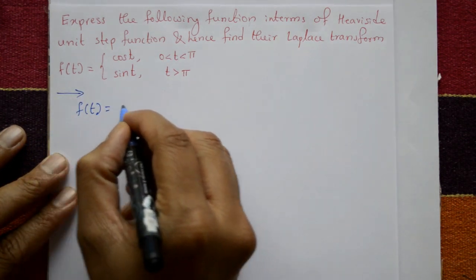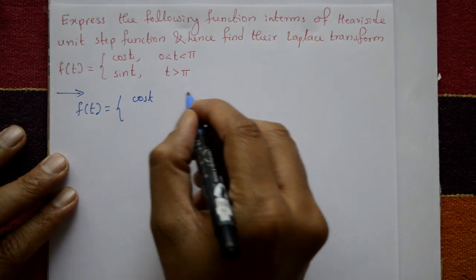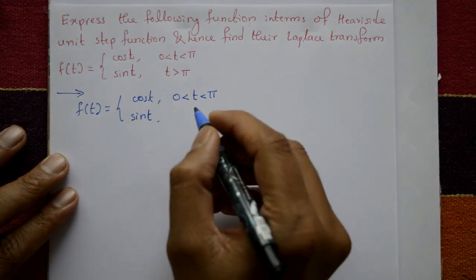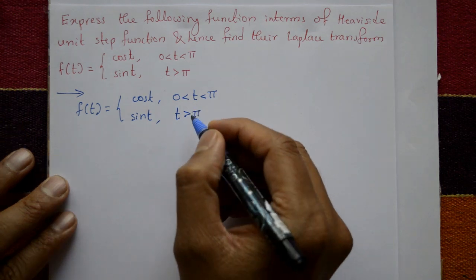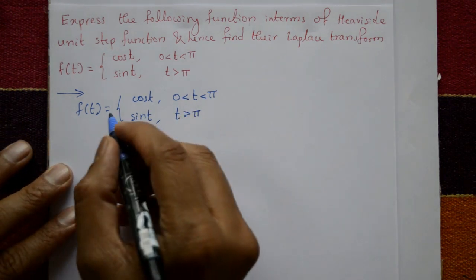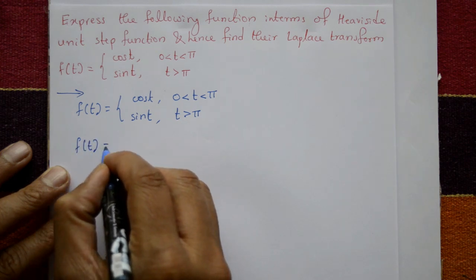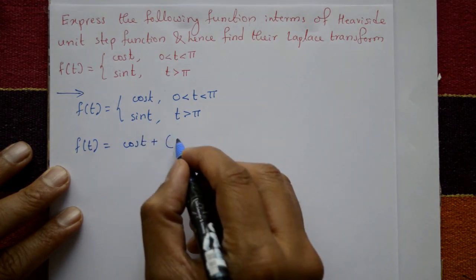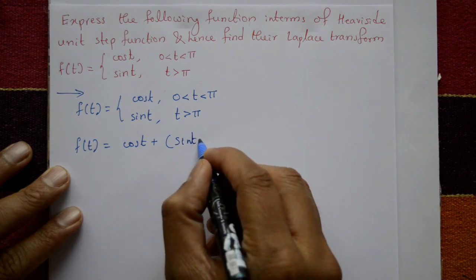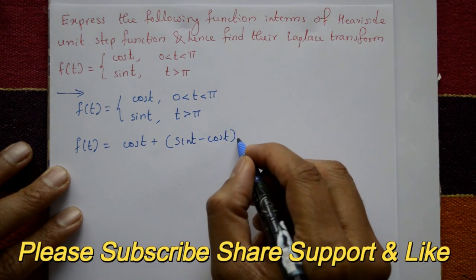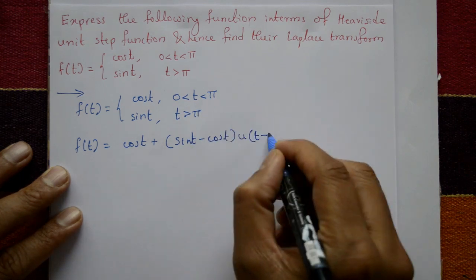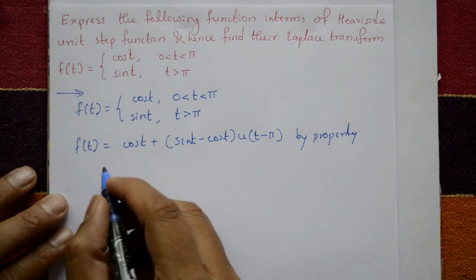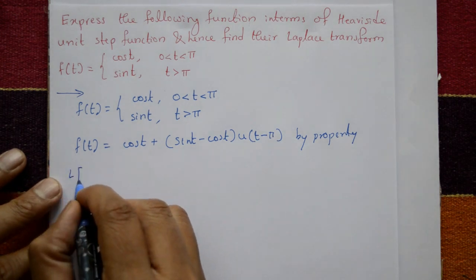The given discontinuous function is f(t) = cos(t) for 0 < t < π, and sin(t) for t > π. Using the unit step function property, f(t) = cos(t) + (sin(t) − cos(t)) · u(t − π).